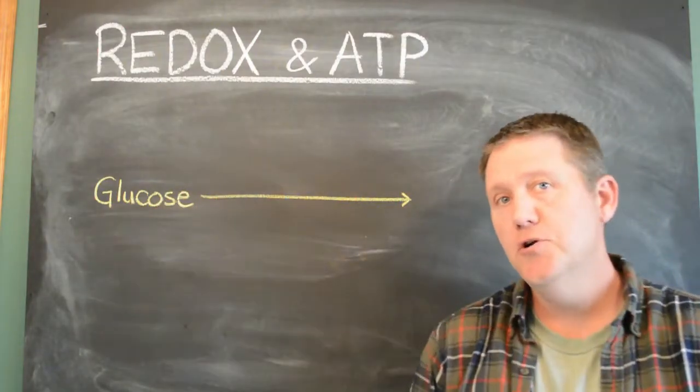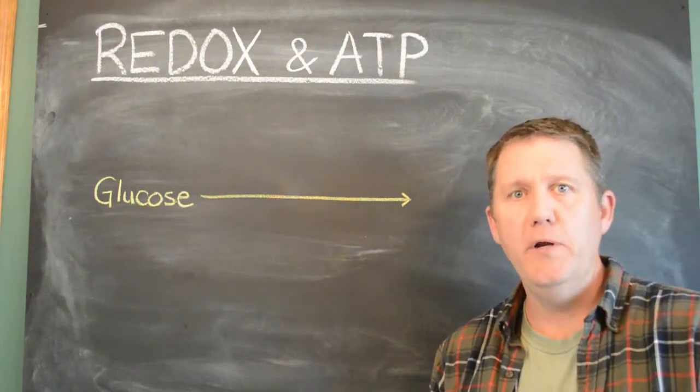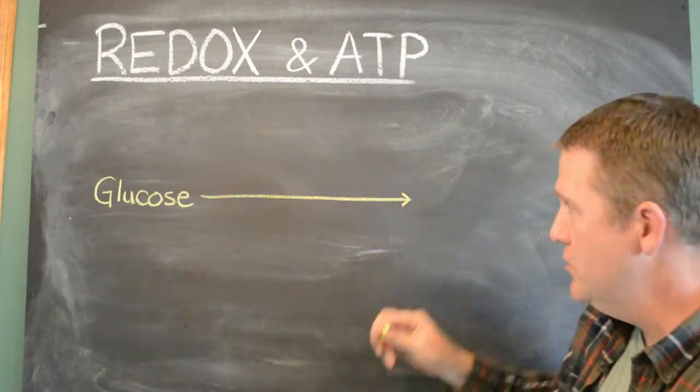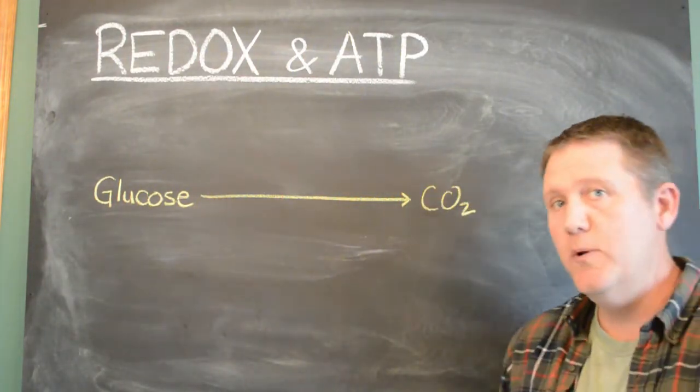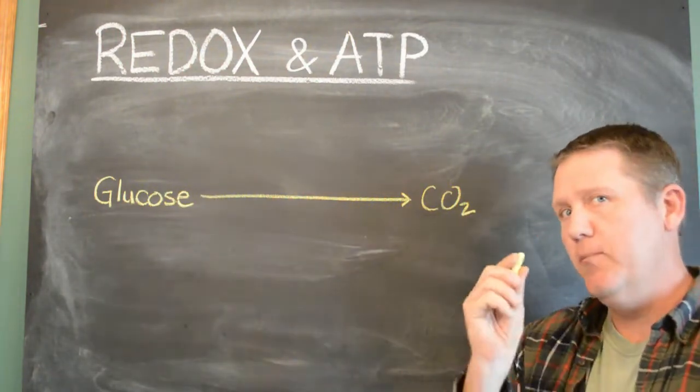Well, when we extract energy from glucose to make ATP, this is not one big chemical reaction. It's a really long, slow, convoluted pathway that eventually results in carbon dioxide. Six of them, to be exact. In fact, glucose is all broken up.